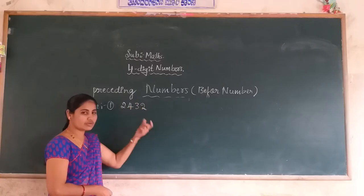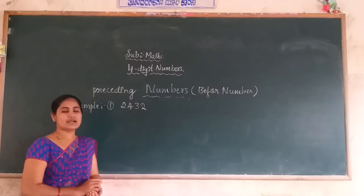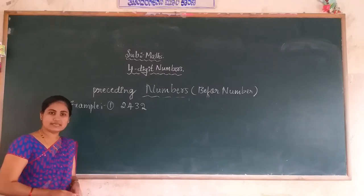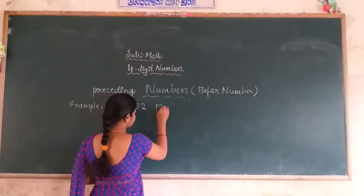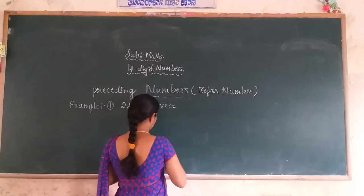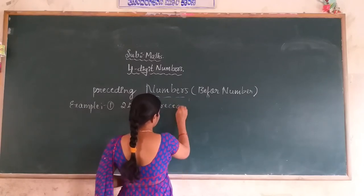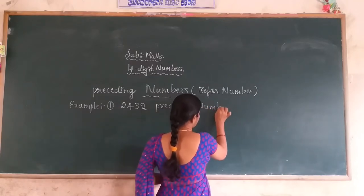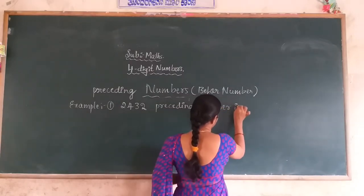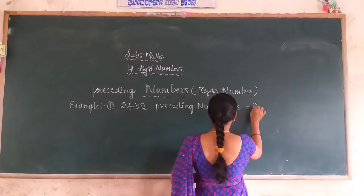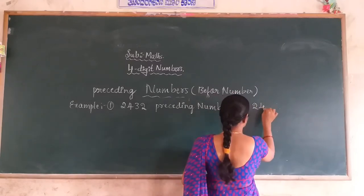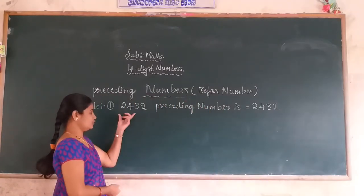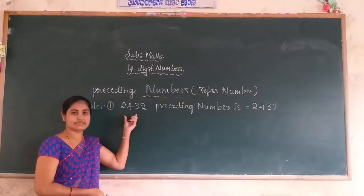Therefore 2431 is the preceding, or before number, of the given four-digit number 2432. That is the preceding number of 2432.